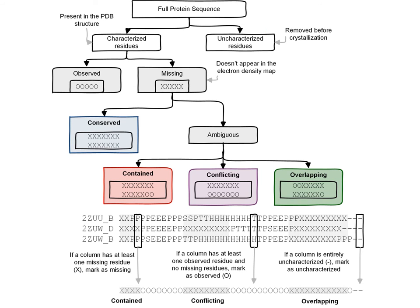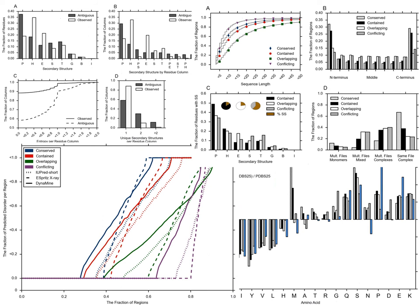We developed a method to examine ambiguous regions by the pattern of missing residues between structures. We found it was really common to see one crystal structure that had the longest missing region encompassing all others. We analyzed secondary structure variability, amino acid composition, the location of the missing region, as well as predicted disorder in these regions.